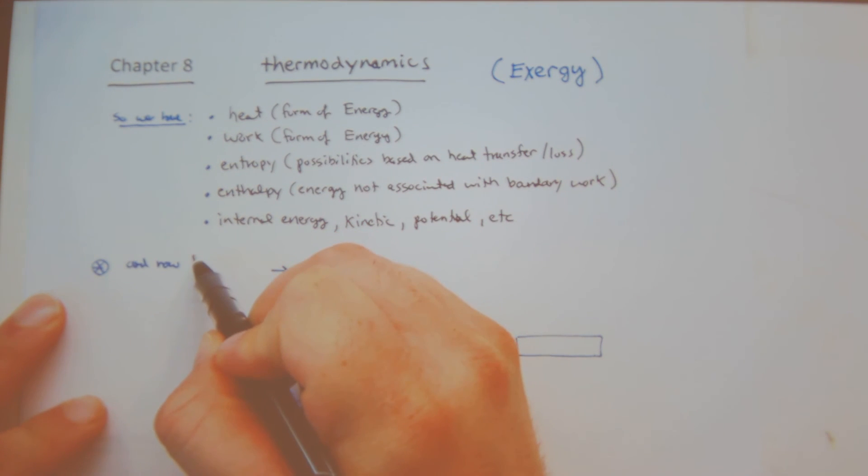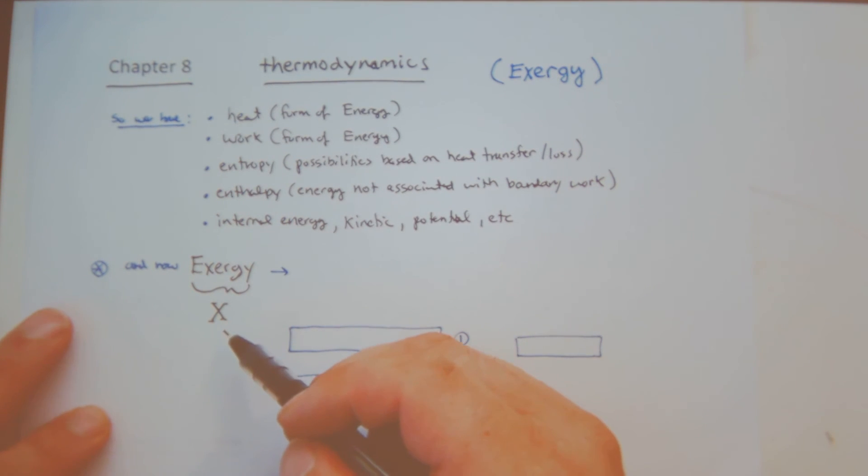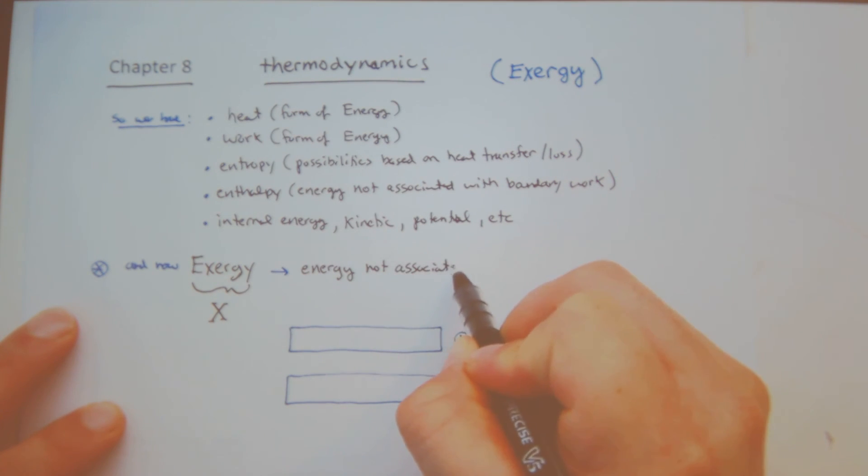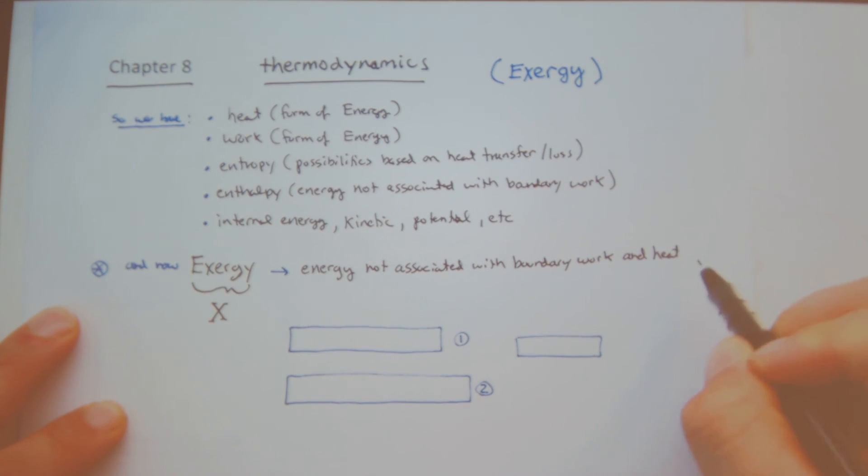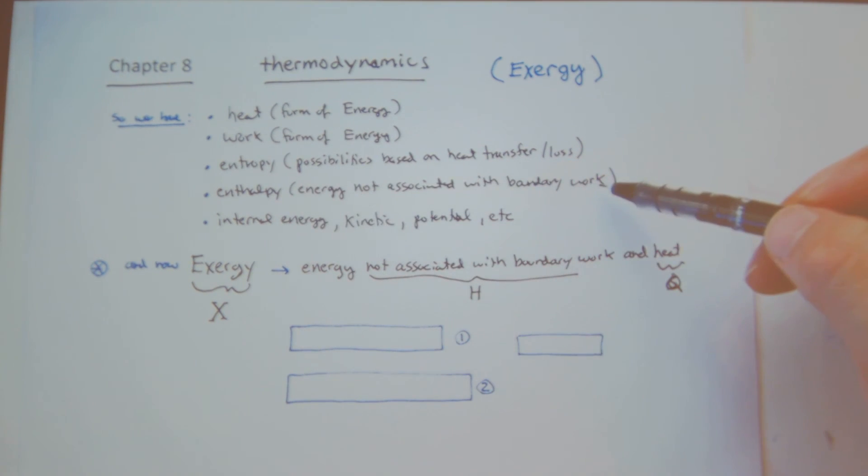And now we have what is called exergy. And the symbol for exergy is a big X. Now there's also a small x, just like there was a big U and small u. And exergy is the energy not associated with boundary work and heat. So not associated with boundary work, so that's my H, and heat is my S or Q. So exergy is the energy not associated with boundary work and heat transfer.